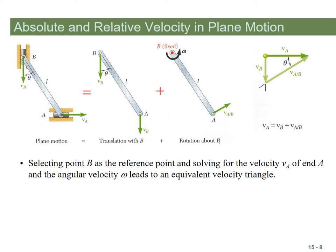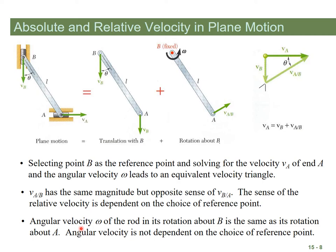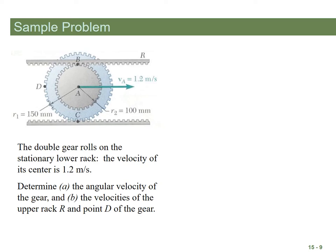The key point here is that angular velocity is not dependent on the choice of reference point. Whether you go from point B or point A, you calculate the same omega. It's just the entire bar rotating, and it doesn't matter where you measure that from.